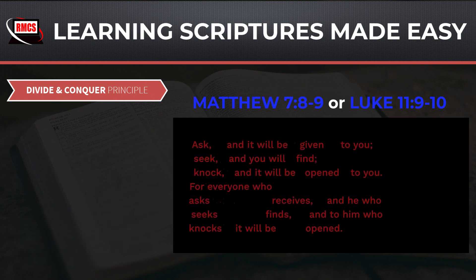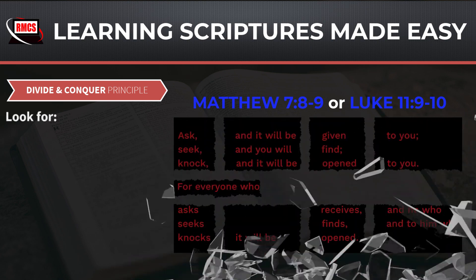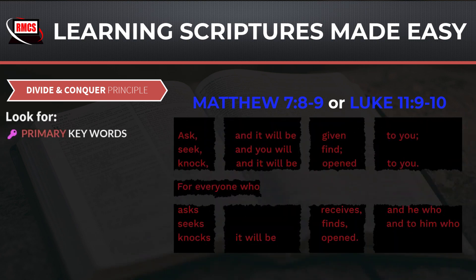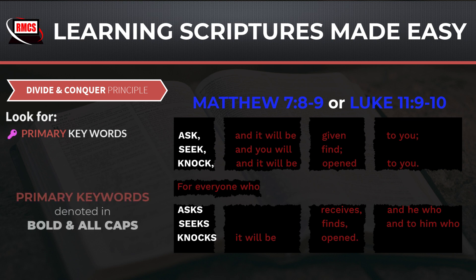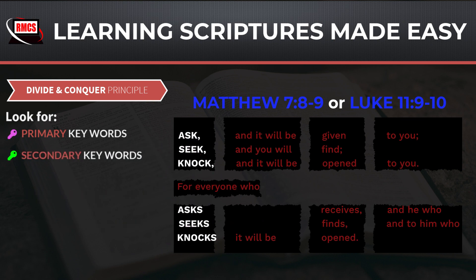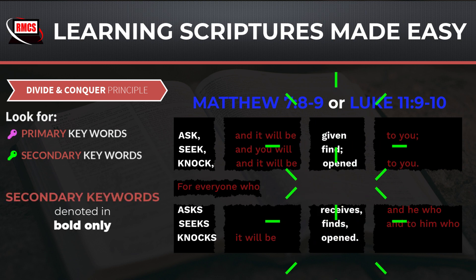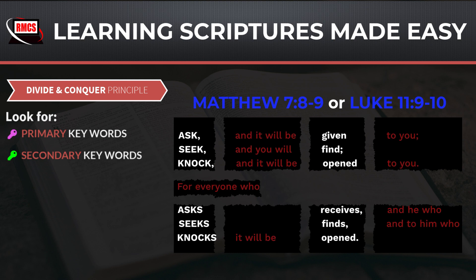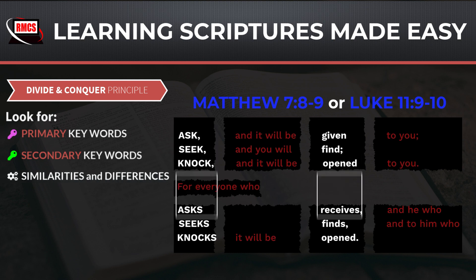As you break them apart, look for primary keywords like ask, seek, and knock — denoted in bold and in all caps — and secondary keywords like given, receive, find, and open — denoted in bold only — or look for similarities and differences within the verses themselves.